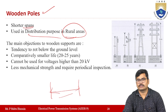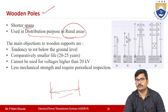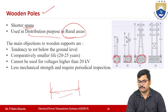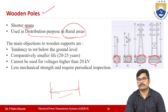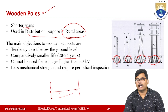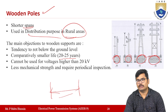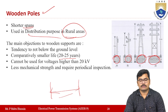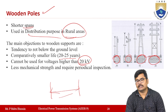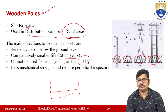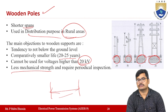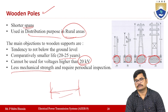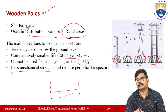The main objections to wooden poles are: they have a tendency to rot below the ground level; their life is very short — generally 20 to 25 years; they cannot support voltages more than 20 kV; they have less mechanical strength; and they require periodic inspection to ensure the pole is in working condition.